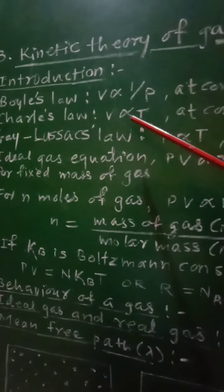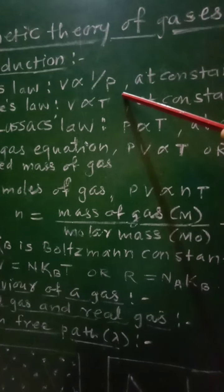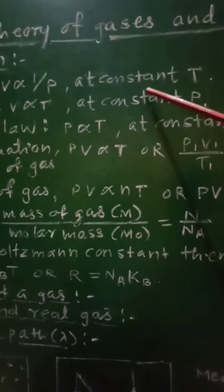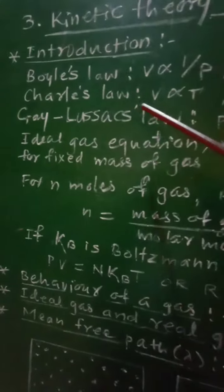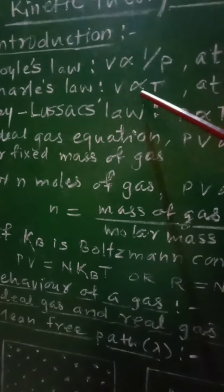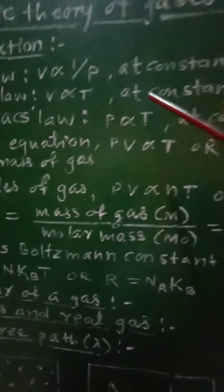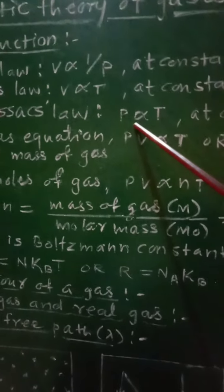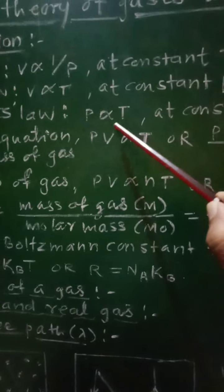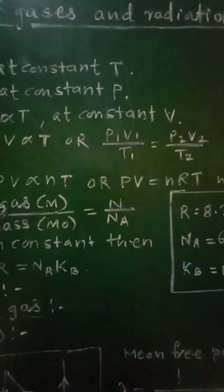First, Boyle's law: the volume of a given mass of gas is inversely proportional to its pressure at constant temperature. Second, Charles' law: the volume of a given mass of gas is directly proportional to its temperature at constant pressure. Third, Gay-Lussac's law: the pressure of a given mass of gas is directly proportional to its temperature at constant volume.